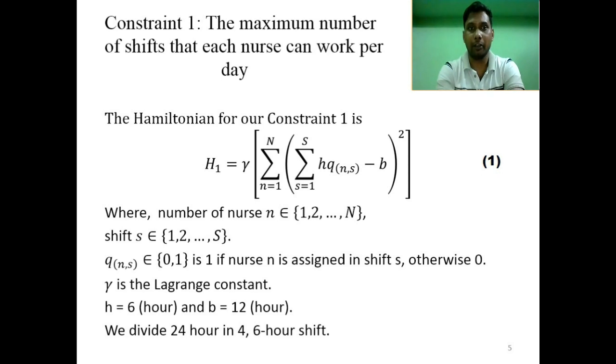Now binary vector variable of our proposed QUBO function q(n,s) belongs to zero and one. If the nurses are assigned for the shift s then q(n,s) equals to one otherwise it will be zero. The gamma is a positive Lagrangian constant set by the programmer to tune the function more.